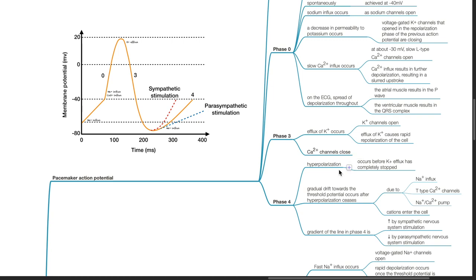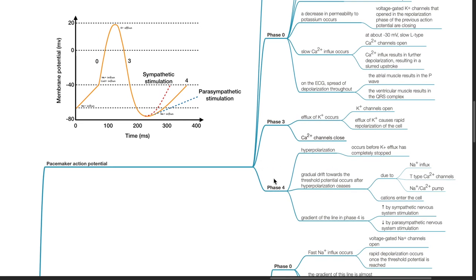During Phase 4, hyperpolarization occurs before potassium efflux has completely stopped. Gradual drift towards the threshold potential occurs after hyperpolarization ceases, due to sodium influx, T-type calcium channels, and the sodium-calcium pump, causing cations to enter the cell. The gradient of the line in Phase 4 is increased by sympathetic nervous system stimulation and decreased by parasympathetic nervous system stimulation.